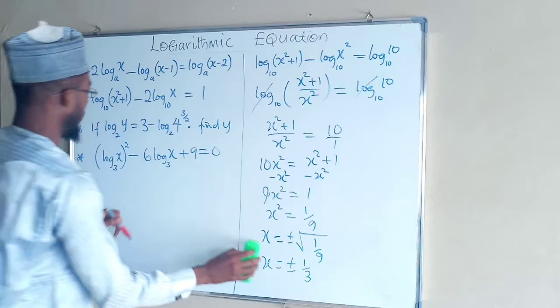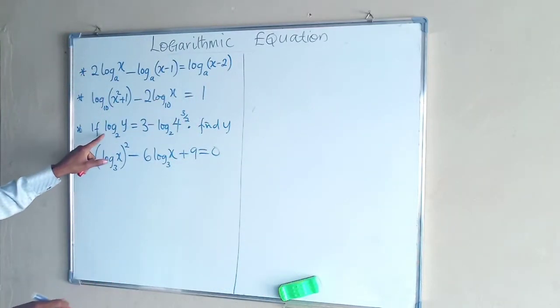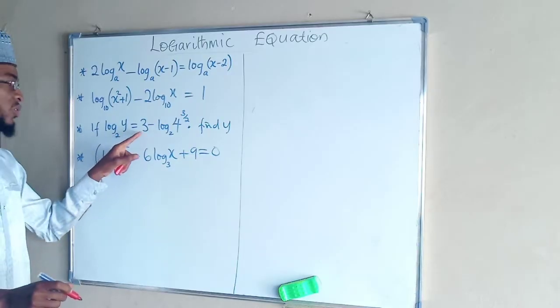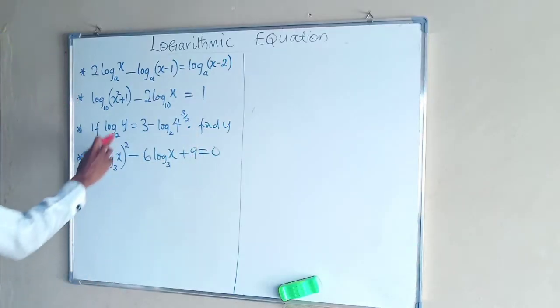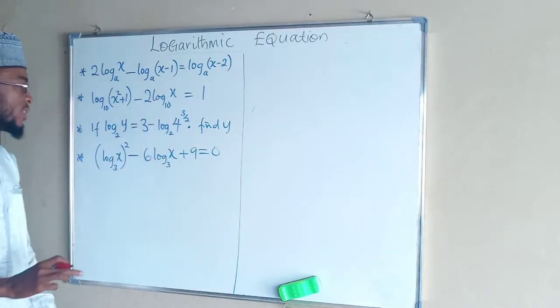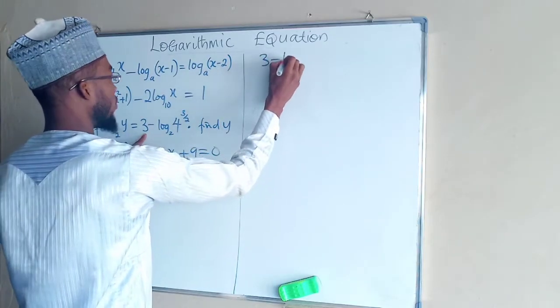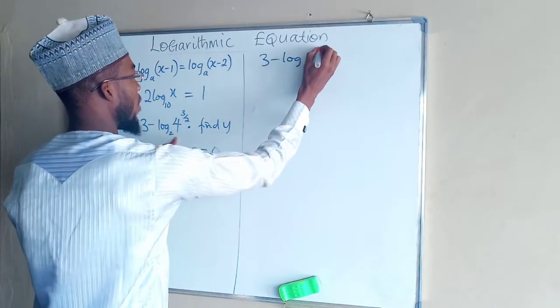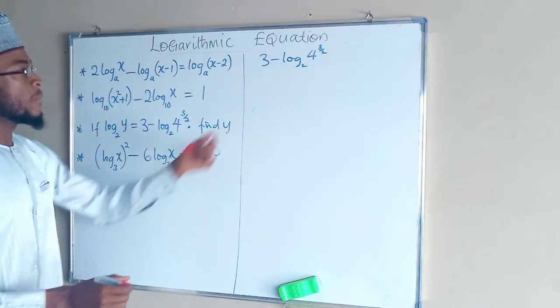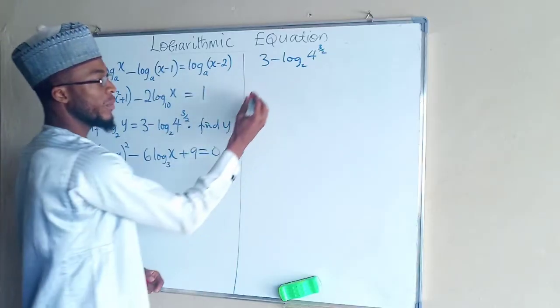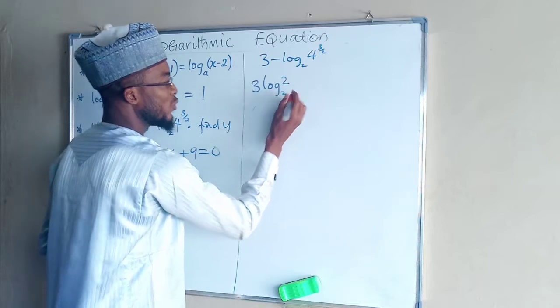So we move to the second to the last one. If log y base 2 equals 3 minus log 4 to the power of 3 over 2, find the value of y that will satisfy this equation. So from the right hand side we have 3 minus log 4 to the power of 3 over 2 base 2. And this one too you can transform it in this form: log 3 log of 2 base 2.